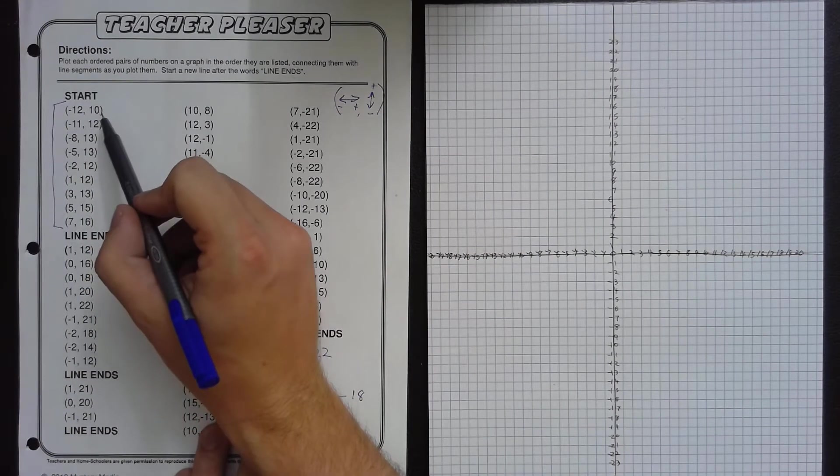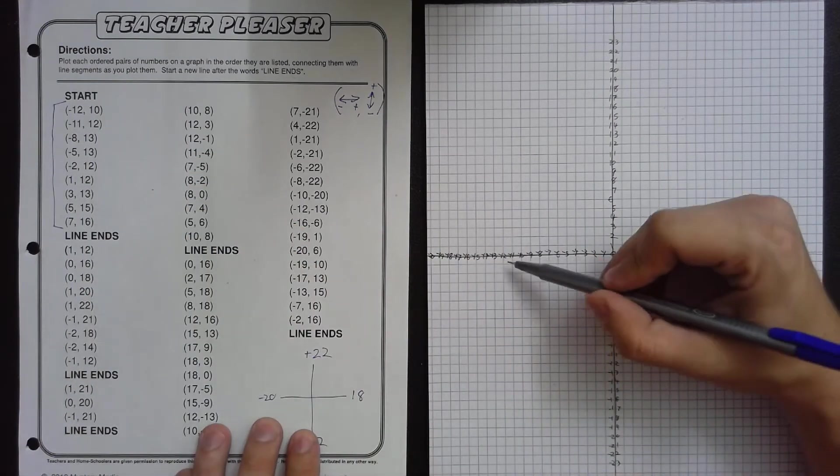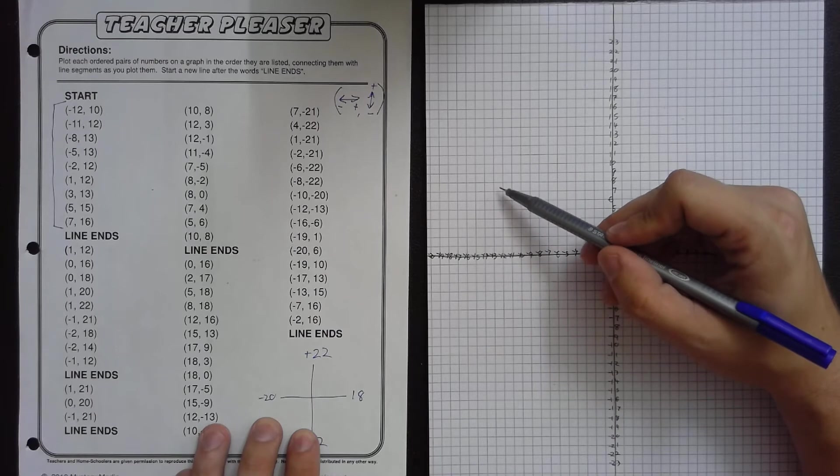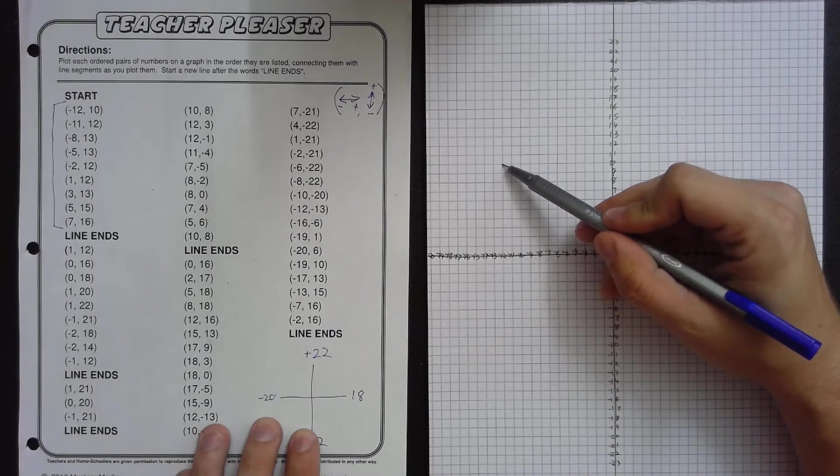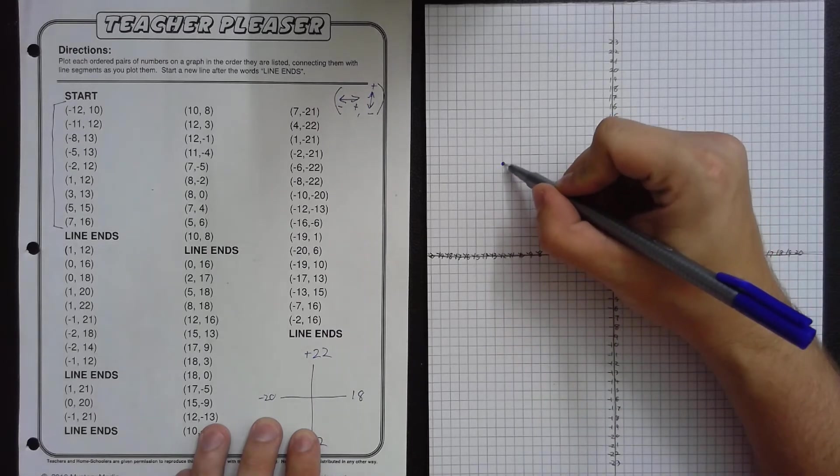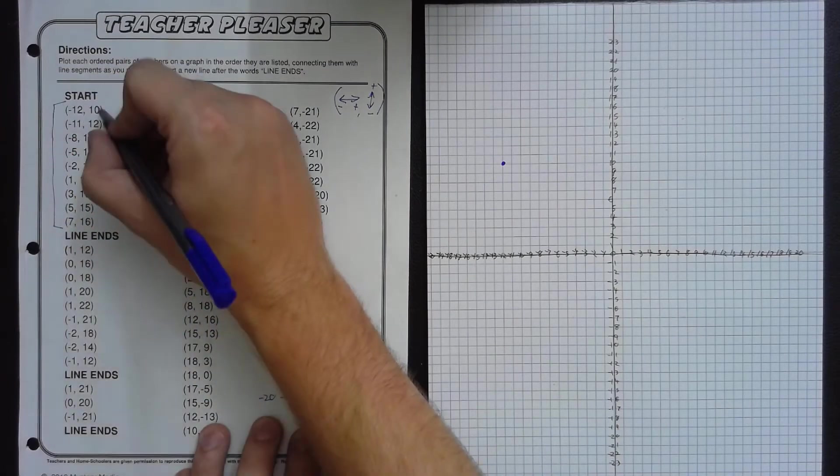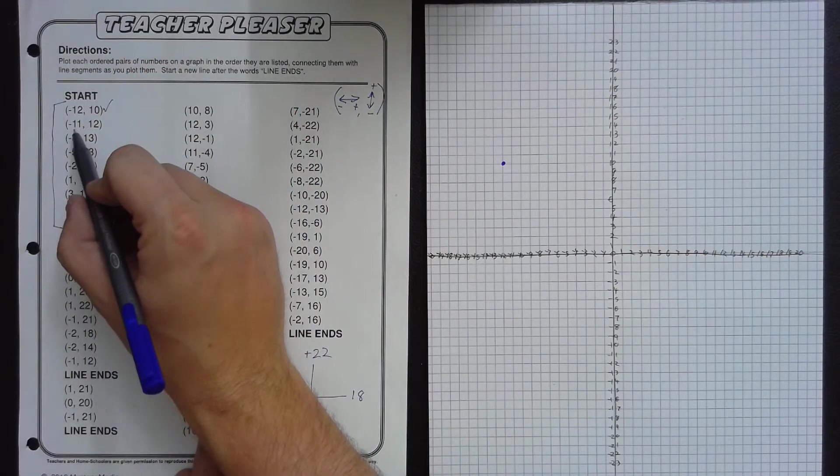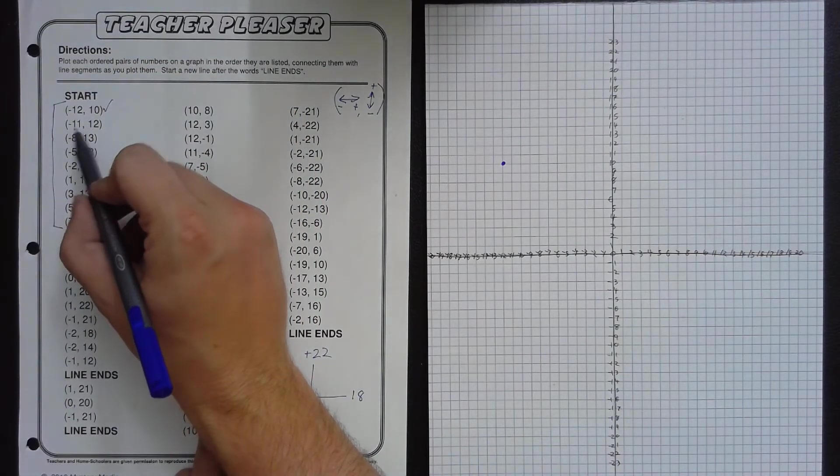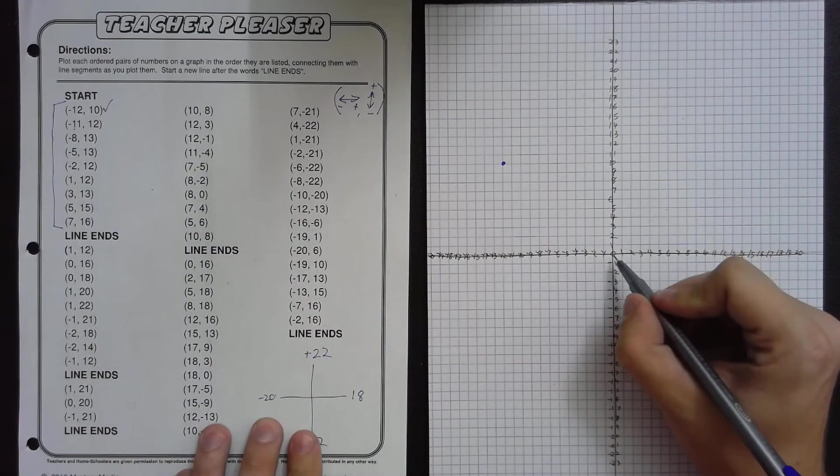So we go 12 to the left, and 10 up. 12 to the left, and then 10 up. So that is right here. Put a checkmark, and we continue. Negative 11, 12.